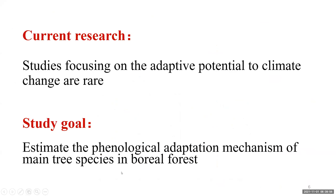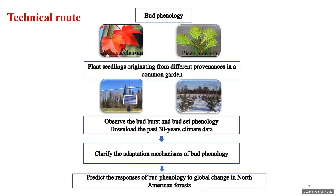Based on previous studies, we noticed that those studies are based on in-situ observation. However, studies on adaptive potential to climate change are quite rare. So our aim is to estimate the phenological adaptation mechanism of the main tree species in boreal forest. We chose two main species: sugar maple, a boreal broadleaf species, and black spruce, a conifer. We collected seeds from different provenances and planted them in a common garden to observe bud phenology and clarify the adaptation mechanism.